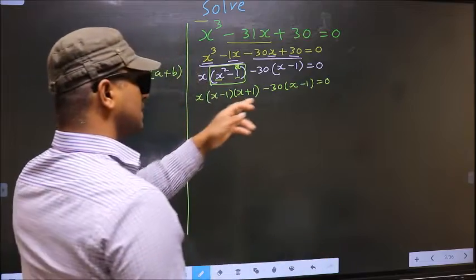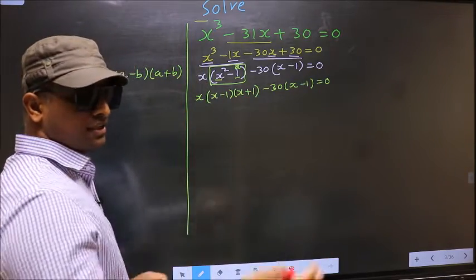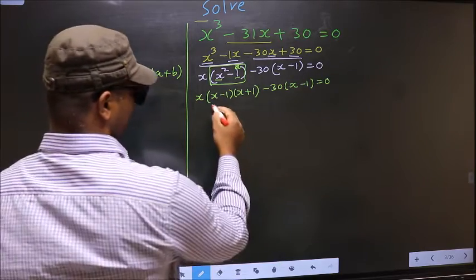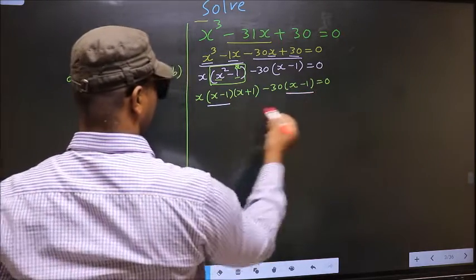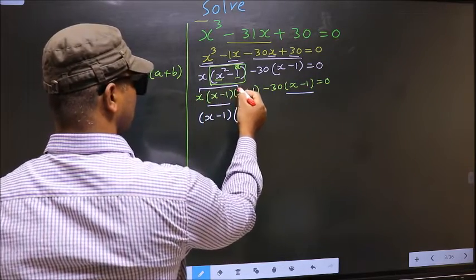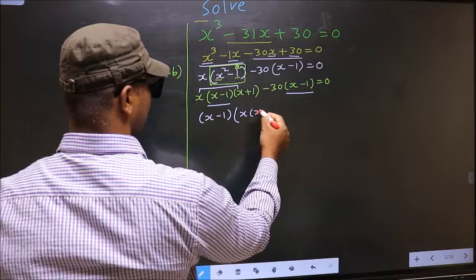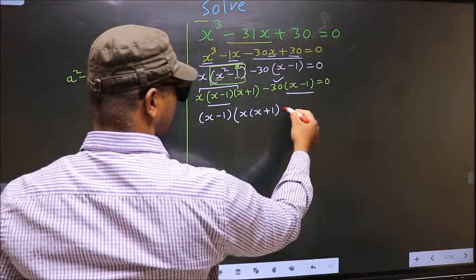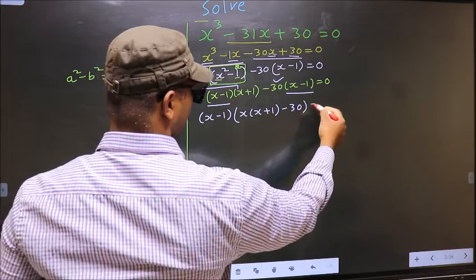Now from this entire equation what can be taken out common is x minus 1. So x minus 1 outside, over here you are left with these two: that is x times x plus 1. Over here you are left with minus 30 equal to 0.